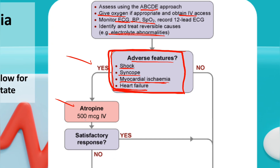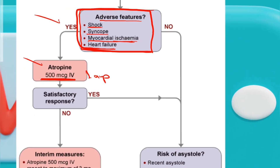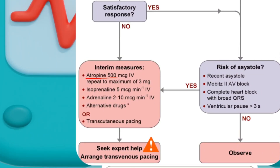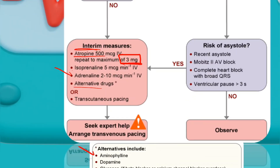If the patient has adverse features due to bradycardia, give atropine 0.5 milligrams (500 micrograms) IV — usually one ampoule. If there is no satisfactory response, repeat atropine up to six ampoules or up to three milligrams total. More than three milligrams can cause rebound bradycardia. After atropine, you may give adrenaline as an interim measure. Alternative drugs include aminophylline, dopamine, glucagon (especially in beta-blocker or calcium channel blocker poisoning), and glycopyrrolate.